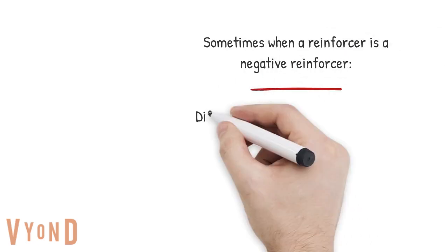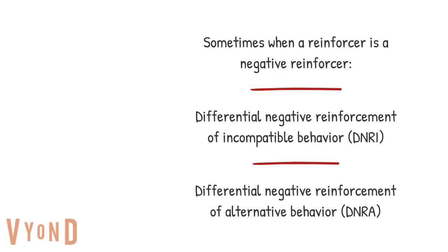A quick note on terminology: when a reinforcer is a negative reinforcer, you might see DNRI — differential reinforcement of a negative reinforcer of incompatible behaviors — and DNRA, which is negative reinforcement of alternative behaviors. These address behaviors that meet the escape or avoidance function. With DNRI, the behavior is incompatible with the problem behavior, and with DNRA it would be the replacement behavior. For example, DNRI might be staying in their seat versus standing up, and DNRA would be requesting a break.